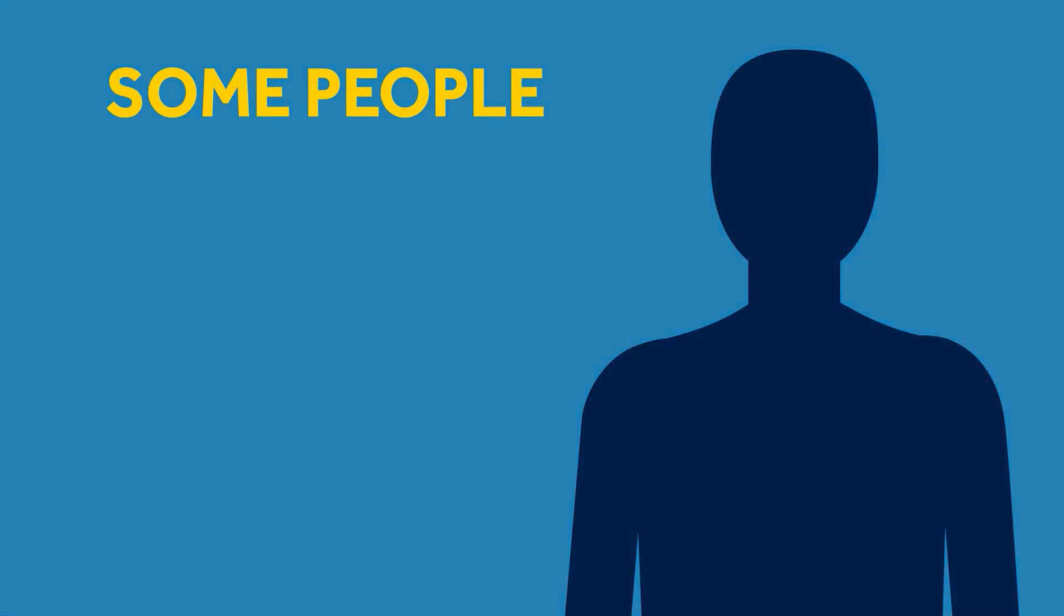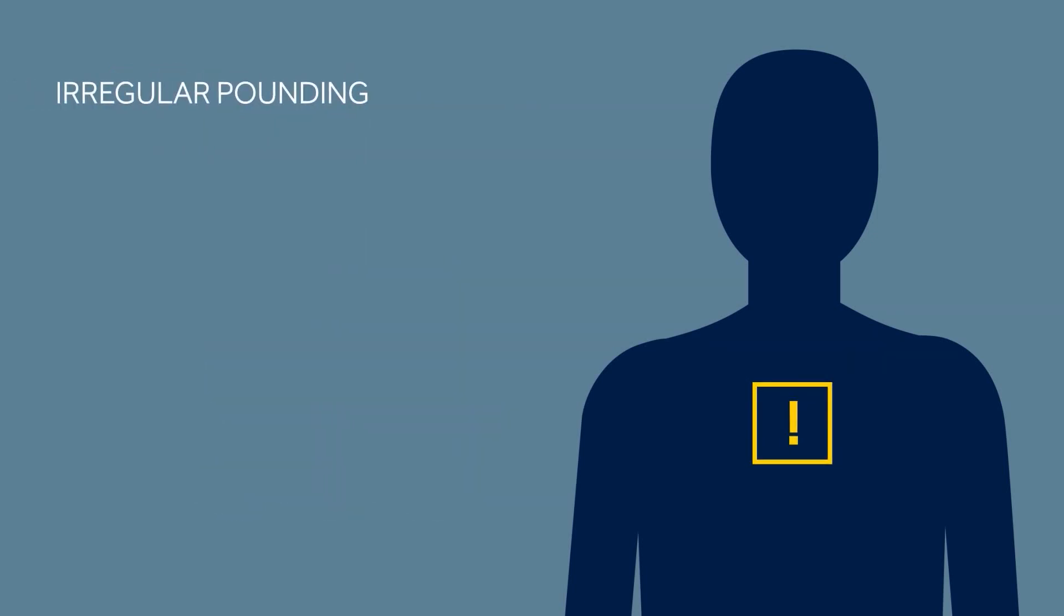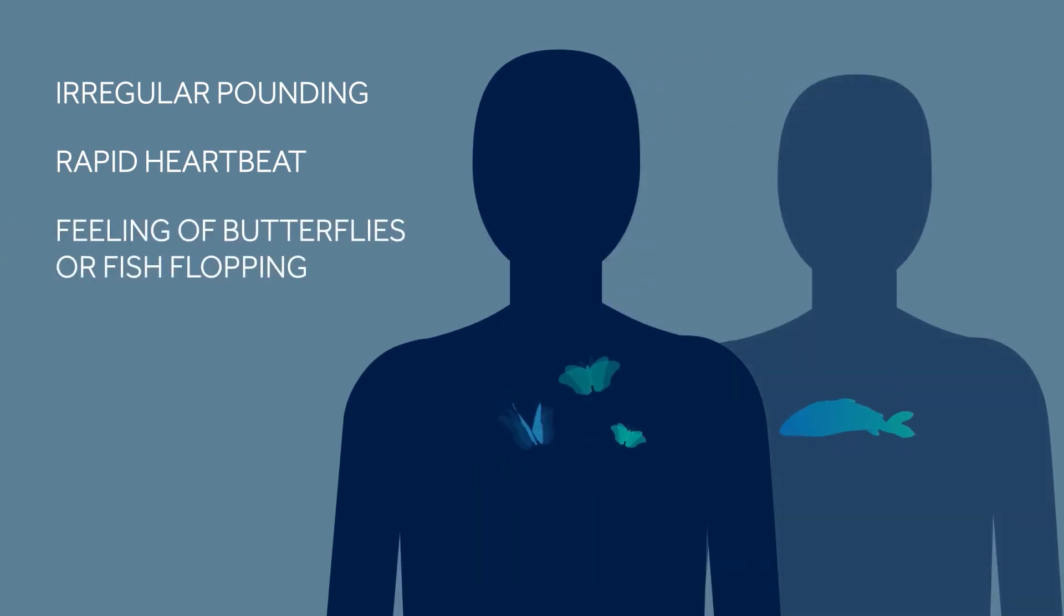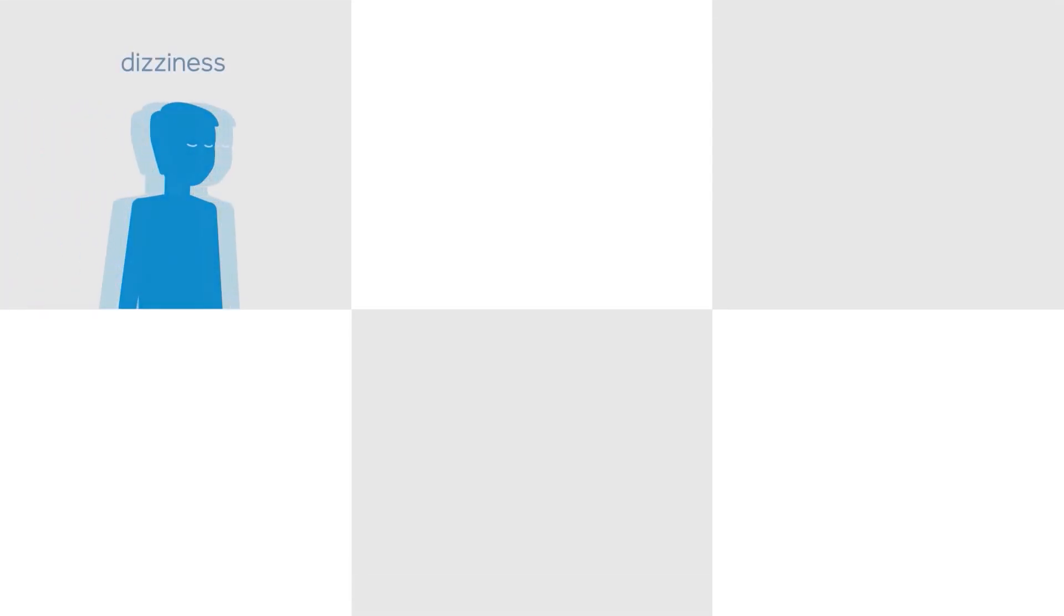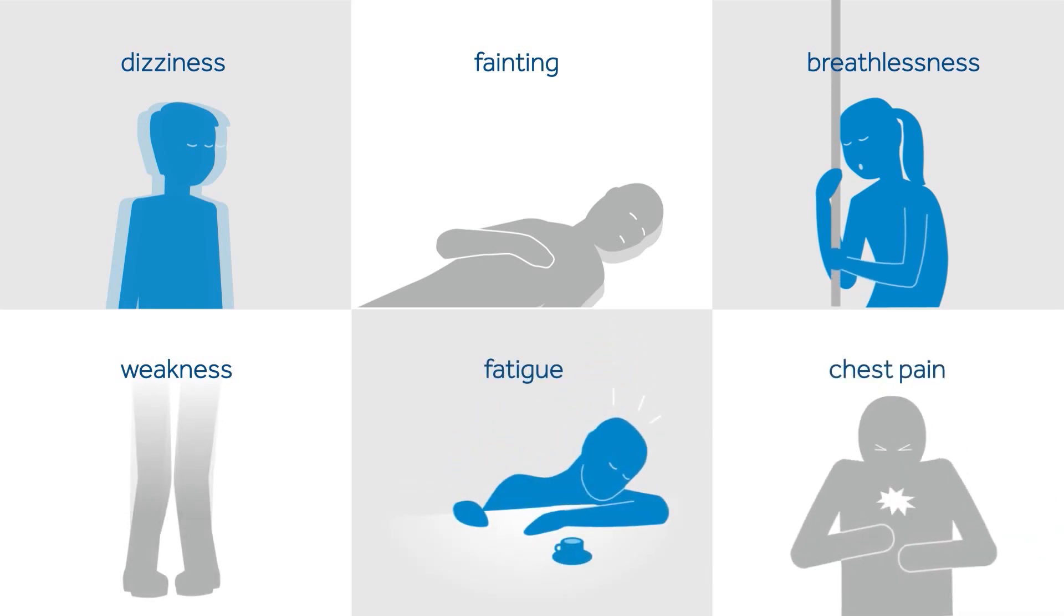Some people with AF never experience symptoms. Others are diagnosed because they experience symptoms and report them. Symptoms can include irregular pounding or rapid heartbeat. Some people describe the feeling of butterflies or fish flopping in their chests. Dizziness, fainting, breathlessness, weakness, fatigue, and chest pains are a few of the most common symptoms of AF.